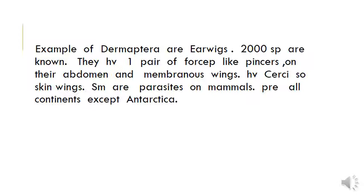Dermaptera jo hai wo earwigs hote hai. Unka common name earwigs hai. 2000 species known hai. Unka important character hai — one pair of forcep-like pincers present hote hai, membranous wings present hote hai, aur cerci jo hai wo skin wings present hote hai. Kuch species parasites hote hai mammals mein. Saare continents mein present hote hai, sirf Antarctica mein present nahin hote hai.